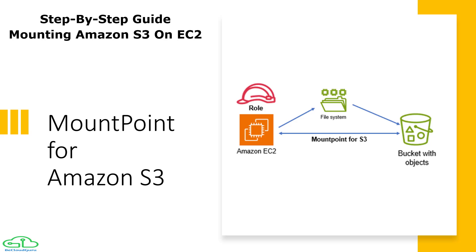Hi everyone. In our previous video, we learned that Amazon S3 is a kind of unlimited object-based storage. We also learned that we cannot mount it as a device, drive, or file system, because by default S3 is meant to be accessed through REST APIs and it's not possible to mount it as a POSIX-enabled file system.